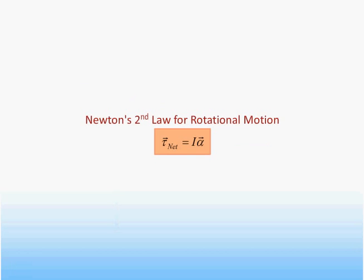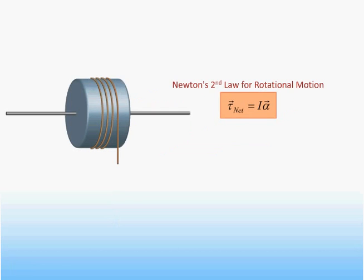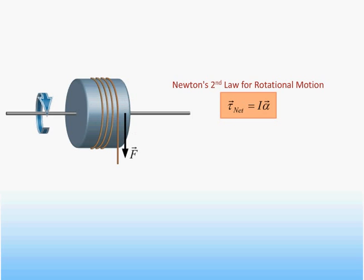Last time we developed the vector equation that determines rotational dynamics: that the net torque on a system of particles about a given axis is equal to the product of the moment of inertia of the system about that axis and the angular acceleration. Today we will apply that equation to a number of examples. For our first example, here we see a solid cylinder mounted on a small frictionless shaft through its symmetry axis, with a massless string wrapped around the outer surface. The string is pulled with a force F causing the cylinder to turn, and we would like to determine the resulting angular acceleration of the disk.